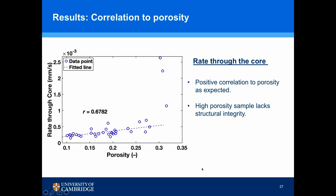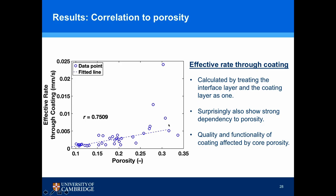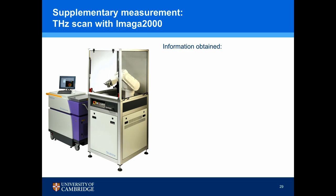Looking at correlations with porosity: as expected, the rate through the tablet core is positively correlated with core porosity. But at high porosity, due to the lack of structural integrity, the rate data starts to lose consistency. Surprisingly, if we plot the effective rate through the coating — calculated by treating the interface layer and coating layer as one — there is also a strong positive correlation with porosity. This implies that the quality and functionality of the coating is actually affected by core porosity, so how the core is manufactured matters.